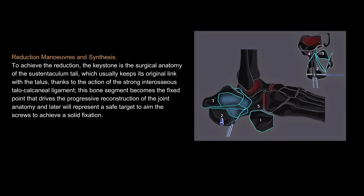Reduction maneuvers and synthesis: to achieve the reduction, the keystone is the surgical anatomy of the sustentaculum tali, which usually keeps its original link with the talus. Thanks to the action of the strong interosseous talo-calcaneal ligament, this bone segment becomes the fixed point that drives the progressive reconstruction of the joint anatomy and later will represent a safe target to aim the screws to achieve a solid fixation.